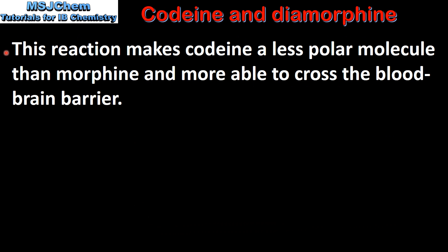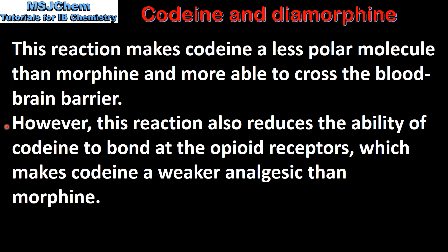This reaction makes codeine a less polar molecule than morphine and more able to cross the blood-brain barrier. However, this reaction also reduces the ability of codeine to bond at the opioid receptors, which makes codeine a weaker analgesic than morphine.